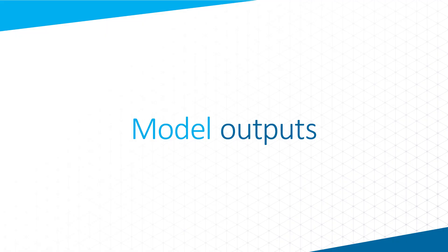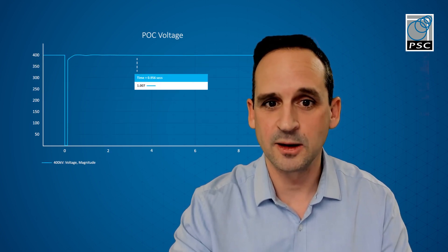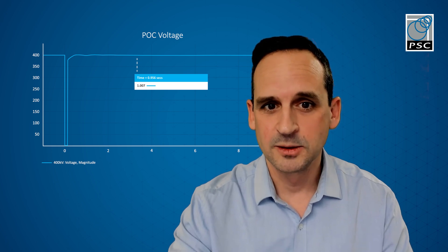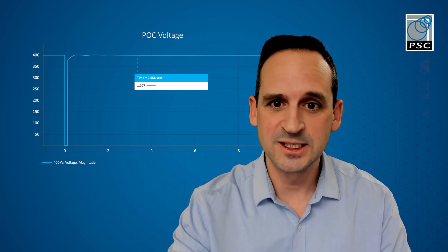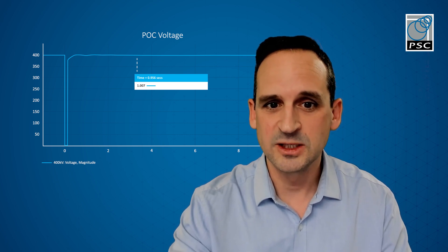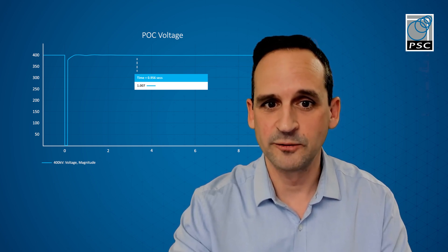Within DigSILENT, we've prepared graphs to see the output of the study. The main three things that we're looking for from the results are, primarily, does the generator remain connected? Does the active power recover to at least 90% of the pre-fault level within 500 milliseconds? And is reactive power injected during the fault?